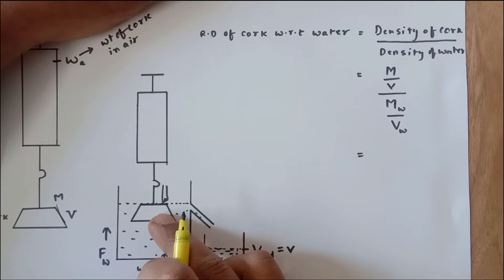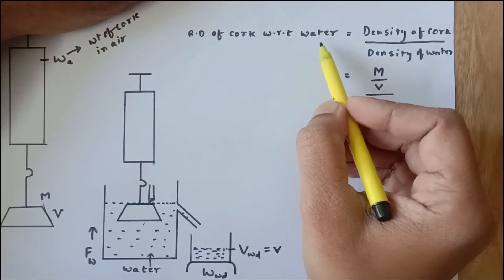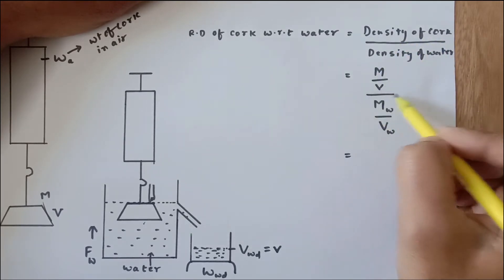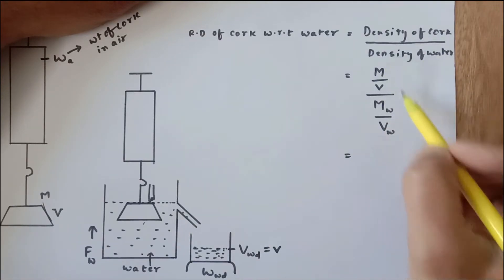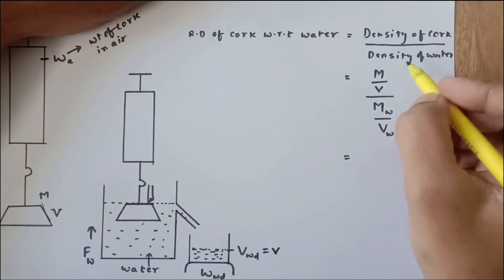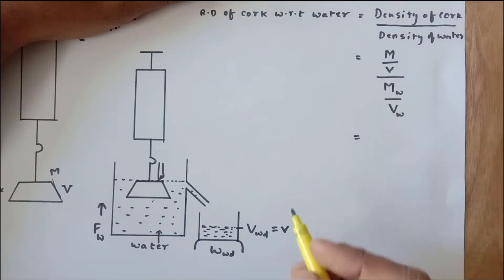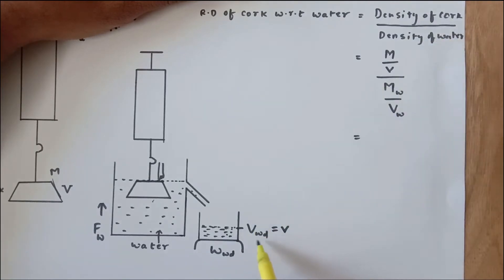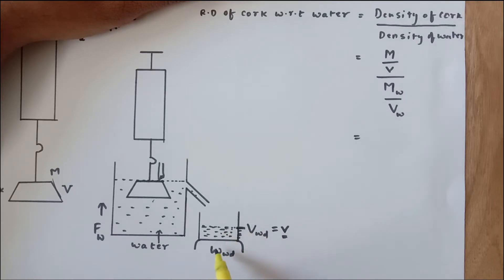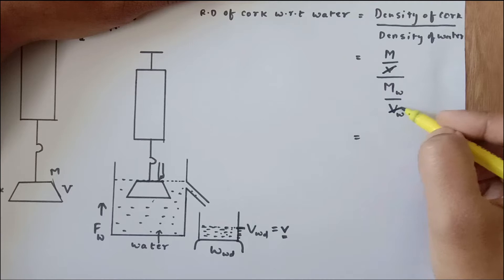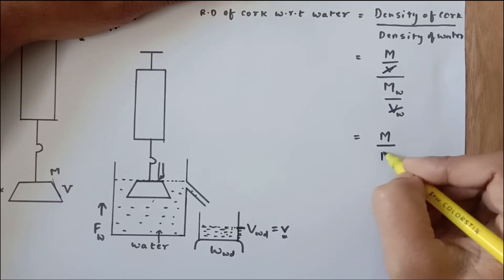If this happened perfectly, the relative density of cork with respect to water equals density of cork divided by density of water. Density of cork equals mass of cork divided by volume of cork; density of water equals mass of water divided by volume of water. Please don't substitute the value of water as 1 g/cm³ here because this is an experiment and you must substitute the measured value. We know the volume and weight of the displaced water from the beaker's graduations. Since the volume of cork equals the volume of water displaced, the volumes cancel, leaving mass of cork divided by mass of water displaced.